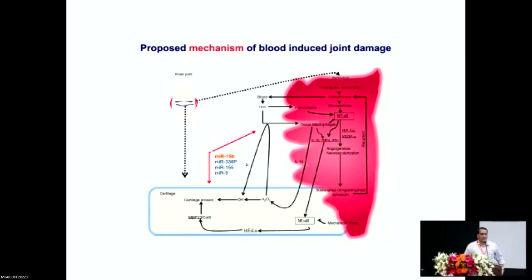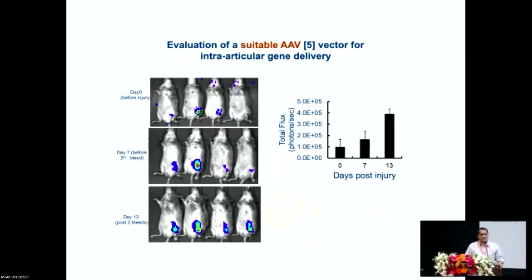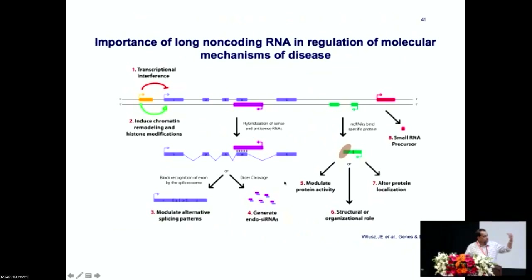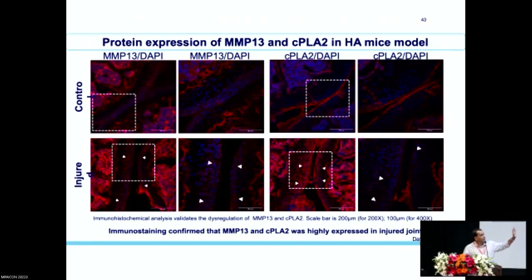In this process, we also identified small microRNAs that were dysregulated. Taking the example of microRNA 15B — this was substantially down-regulated in the articular cartilage joint when there were multiple bleeds. We developed an AAV-based viral vector to deliver it specifically into the articular cartilage joint. When we overexpressed microRNA 15B in hemophilia A mice with hemophilic arthropathy, this substantially reduced both VEGF and potentially HIF molecules. We have extended these studies to other small RNAs including long non-coding RNA, and we are working to convert them into a therapeutic by local intra-articular transfer into the joint.